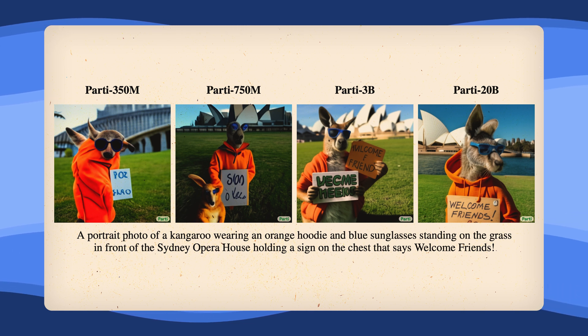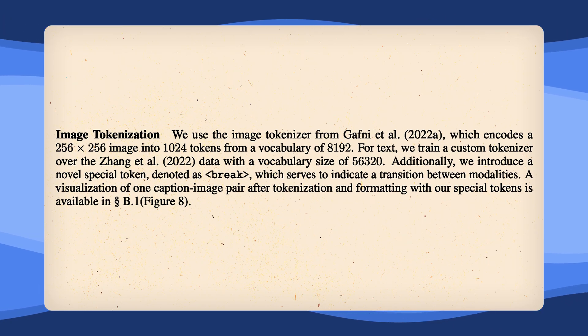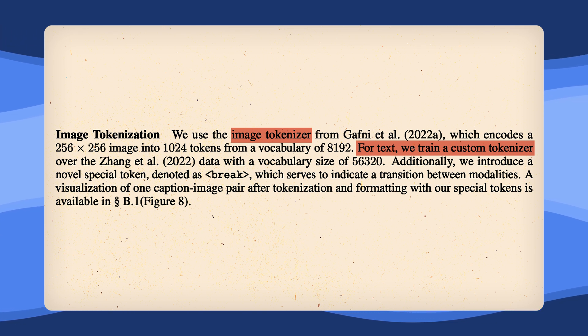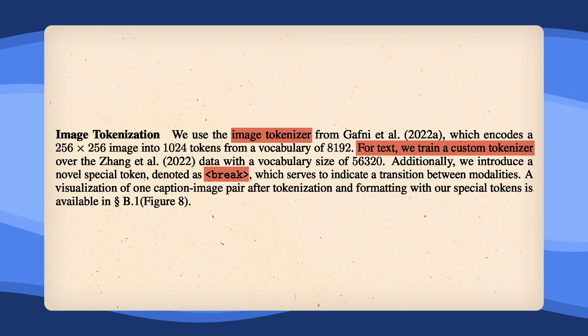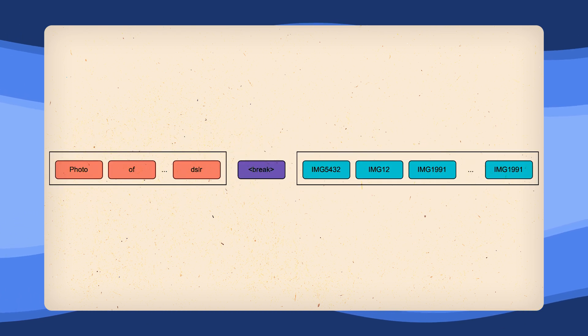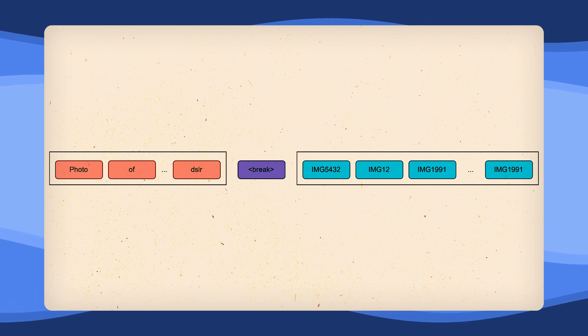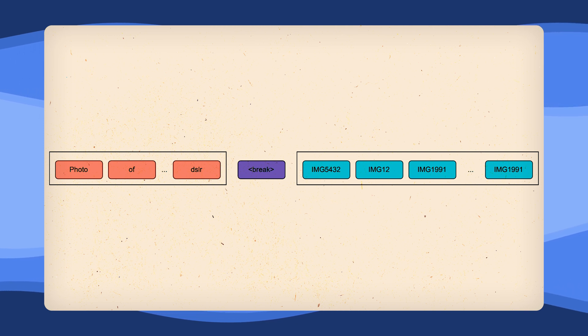Chameleon is an auto-regressive decoder-only model and not an encoder-decoder model like Party. What that pretty much means is that the text conditioning for the generation process happens not via an encoder and cross-attention, but as simple text tokens in the decoder context. That means the vocabulary now has to include both the image token vocabulary — where the authors use an already existing tokenizer — and the text token vocabulary, where the authors train a new tokenizer themselves. Additionally, the authors introduce a new break token that indicates a transition in modalities. Our decoder input and output can look something like this: we start with a prompt, 'a photo of a cat shown on a DSLR,' followed by the break token, and the decoder then predicts the next image tokens one by one.